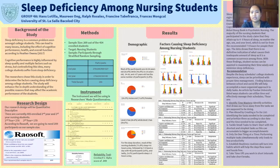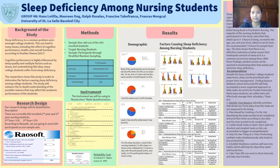Conclusion. Sleep deficiency is a sleep disorder caused by factors that can be categorized as biological, medical, psychiatric, environmental, genetics, non-psychiatric, cognitive, and psychosocial, according to Antiohtang Book in Psychiatric Nursing. The majority of nursing students that participated in the study claim that they attain up to 4 to 6 hours of sleep, regardless of age, sex, and year level, which is not far from the recommended 7 to 9 hours for people their age. The data shows no definitive indication of what causes their inadequate amount of sleep as it is a common occurrence among them. With these findings, student nurses can be assisted in maximizing their time wisely and minimizing sleep deficiency.